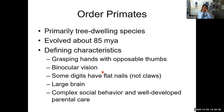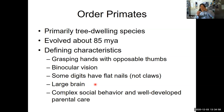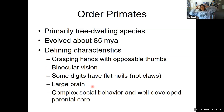Primates also have binocular vision - in other animals the eyes are further apart giving different images on each eye. In primates the eyes overlap, which helps with depth perception - knowing how far to reach to grab something. Depth of perception helps with being a pretty effective predator. Some digits have flat nails rather than claws like cats and dogs - the flat nails help protect the tips of fingers and aid with grasping. Primate brains tend to be larger, and primates really started to develop more complex social behavior and well-developed parental care.